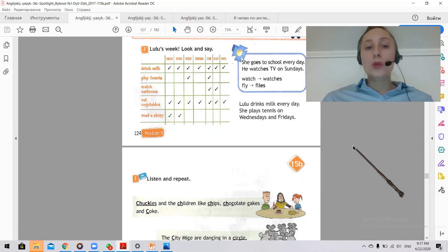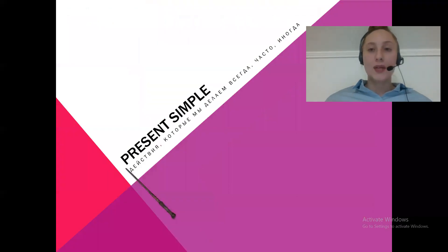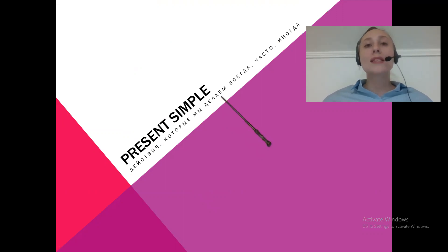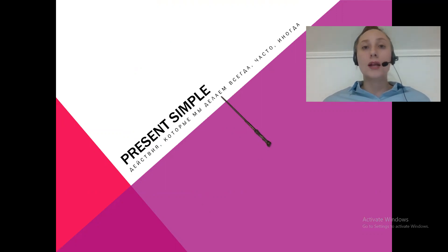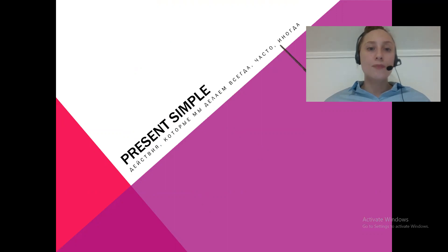So I want to show you my presentation about present simple tense. Я хочу вам показать мою презентацию про простое настоящее время и познакомить вас с этим временем. Present Simple — что это такое? Что это за время? Это время, которое нам с вами нужно, чтобы рассказать о наших повседневных делах, регулярных действиях, которые мы выполняем либо всегда, либо часто, либо иногда, либо даже вообще никогда.